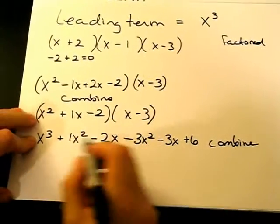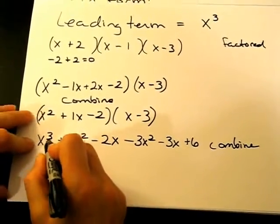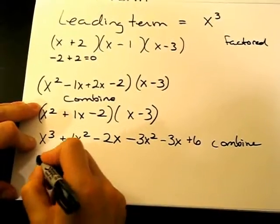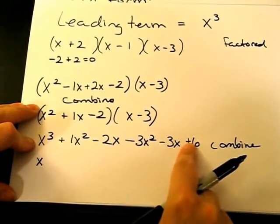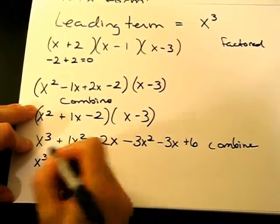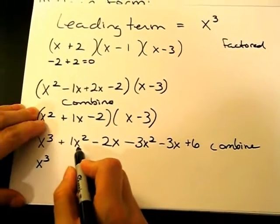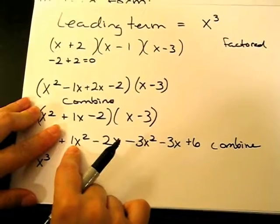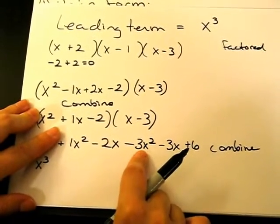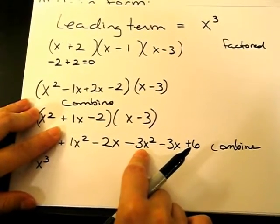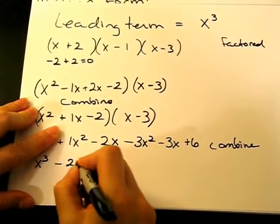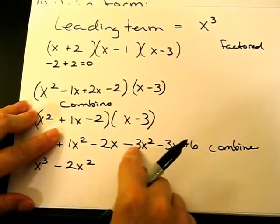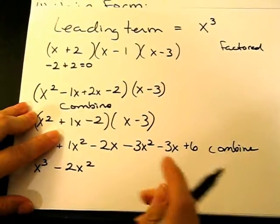We're going to combine again like terms. So first thing I'm looking at is going to be my highest term here, and my highest power is a third, so I don't have any other x to the third powers. I'm just going to bring that down. Then I'll look at my x squareds. So I have a positive 1x squared and a negative 3x squared. That'll become a negative 2x squared. So it's basically 1 minus 3, which is a negative 2.